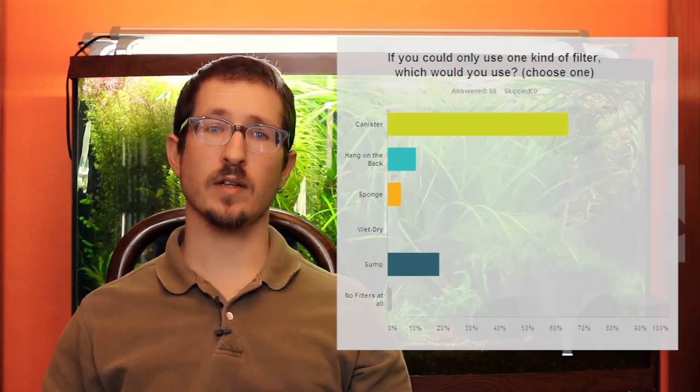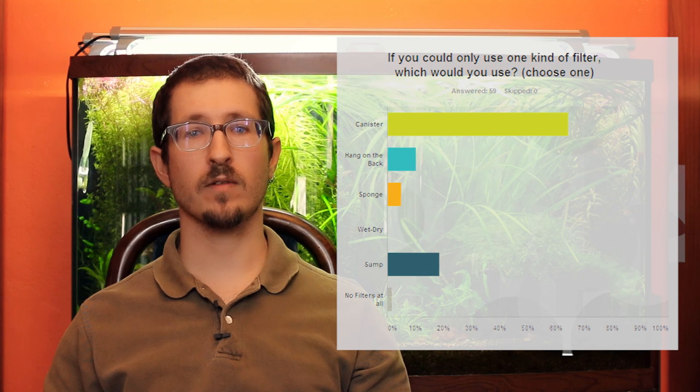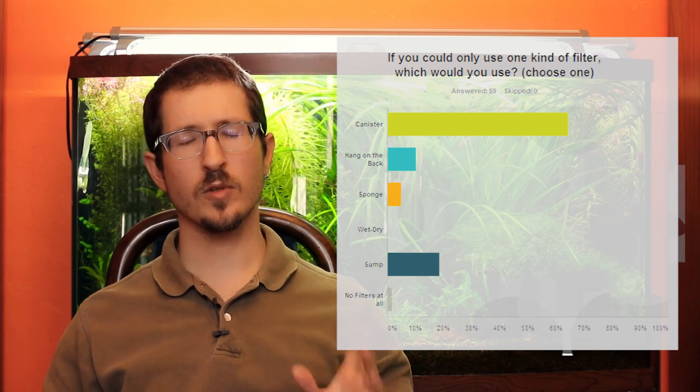And to the question of if you could only use one kind of filter, 64% said canister, 10% said hang on the back, 5% said sponges, and almost 20% said sumps. So it looks like more of you wish you could be using sumps, and quite a few of you want to ditch your sponges. Now let's quit stalling and start talking about some light.